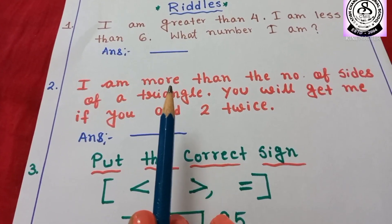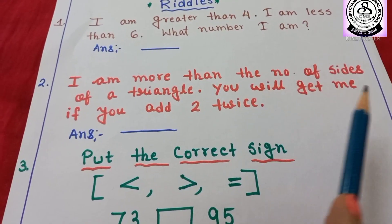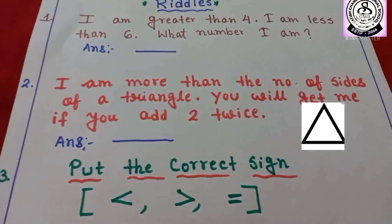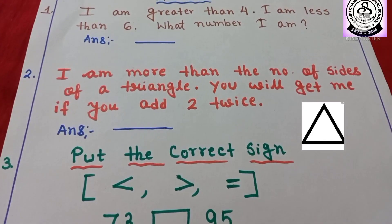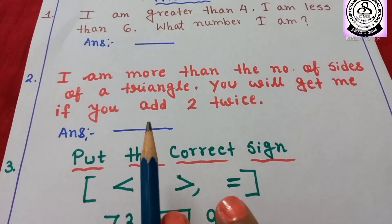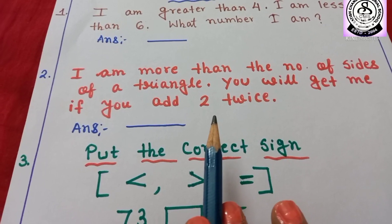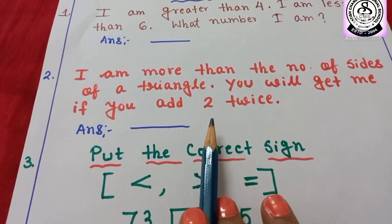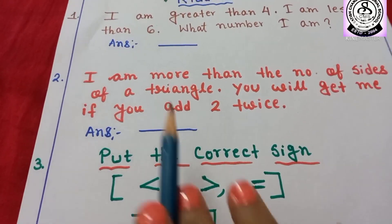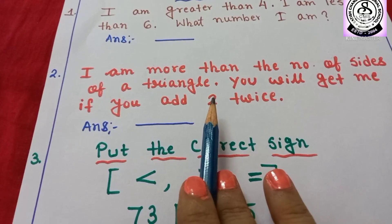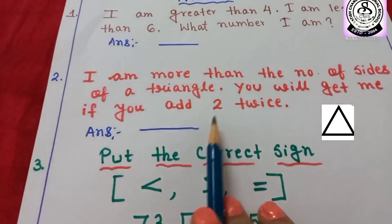I am more than the number of sides of a triangle. Can you tell me how many sides a triangle has? Yes — 3. You will get me if you add 2, two times. So 2 plus 2 is equal to 4. I am more than the number of sides of a triangle — that's more than 3. After 3 is 4. So here you have to write 4.